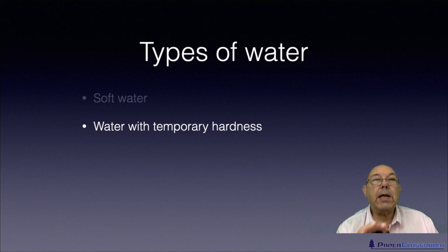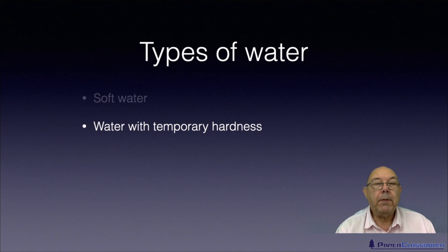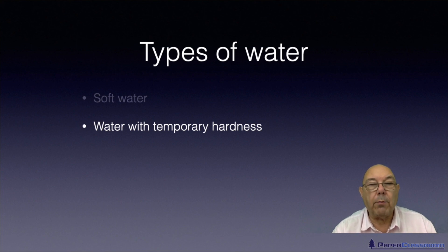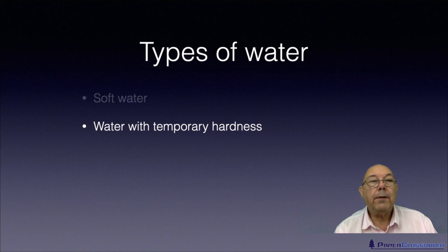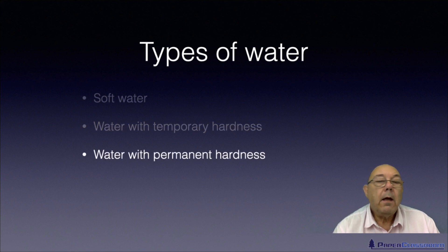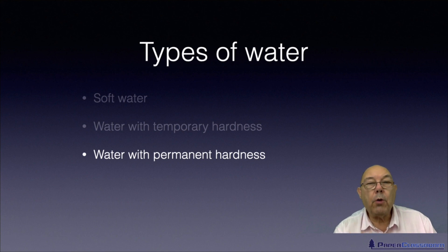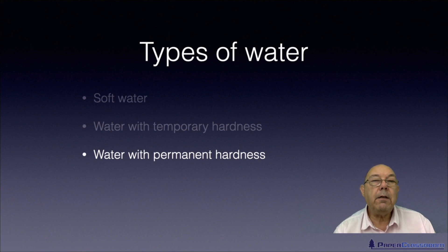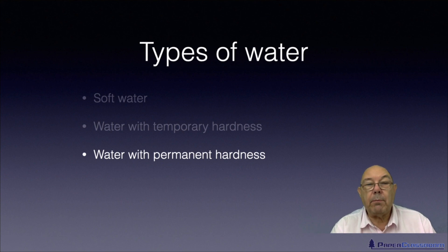You've got water that has temporary hardness — if you boil it, the hardness will disappear. You actually get a deposit of calcium carbonate formed, and once that material is out of solution as an insoluble solid, it's no longer in solution to cause the problems that hardness causes. Then there's water that is permanently hard — no matter how long you boil it, you will not get rid of the hardness. You have to resort to ion exchange methods or chemical precipitation methods.